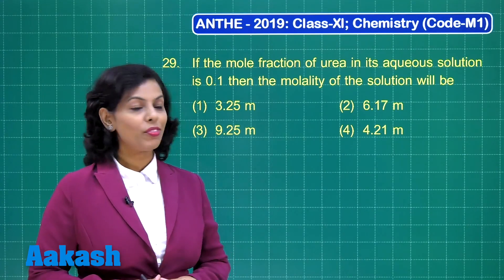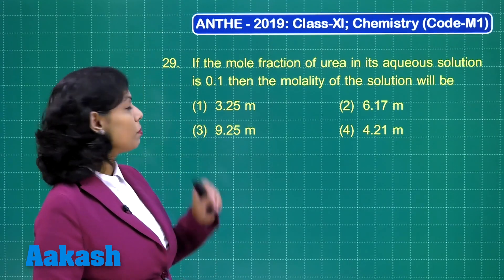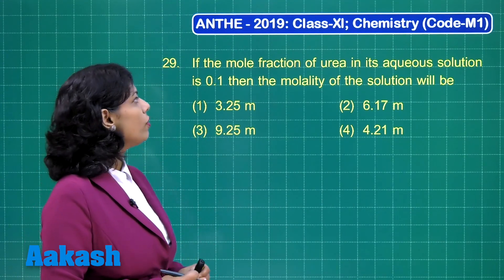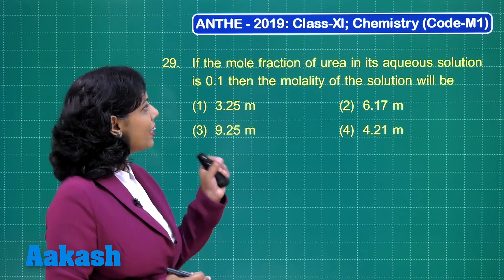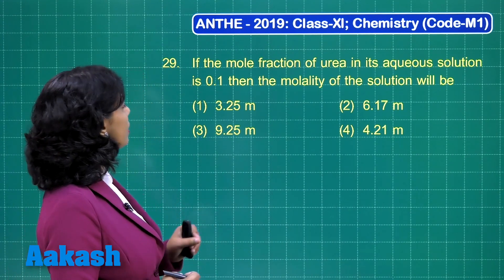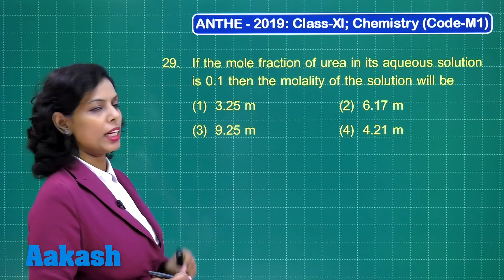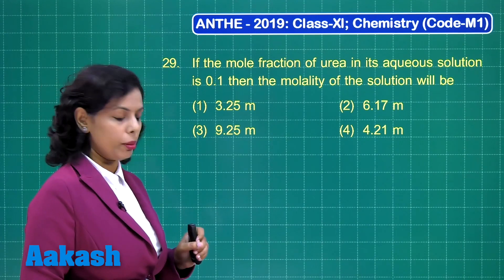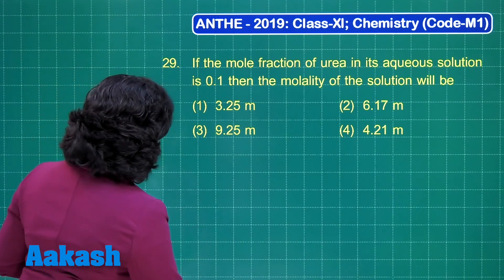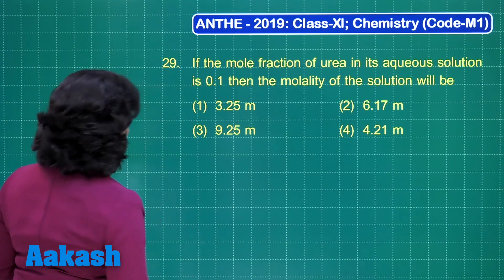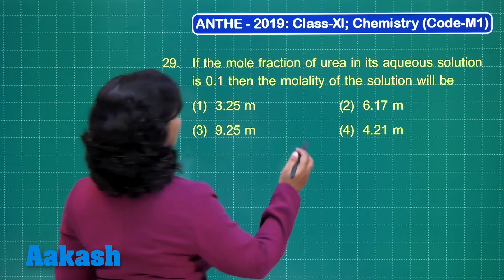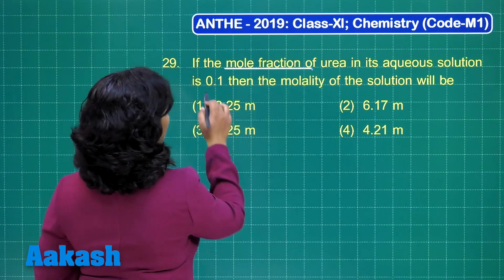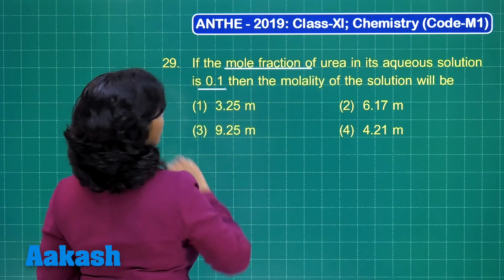Now students, it's the turn for question number 29. If the mole fraction of urea in its aqueous solution is 0.1, then the molality of the solution will be. The important thing given here is the mole fraction, and that mole fraction is 0.1.